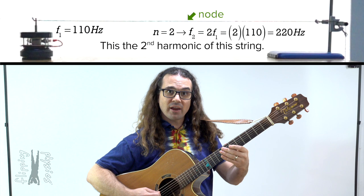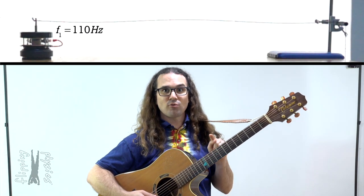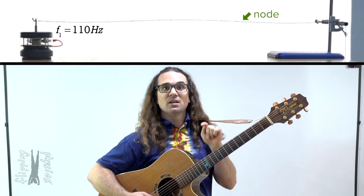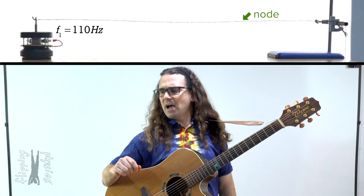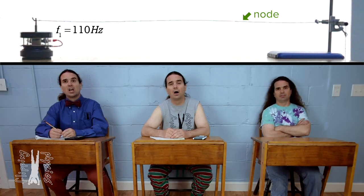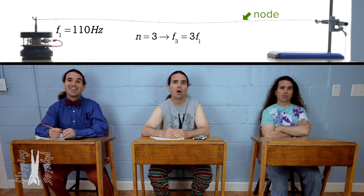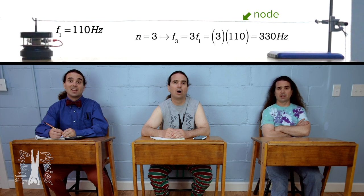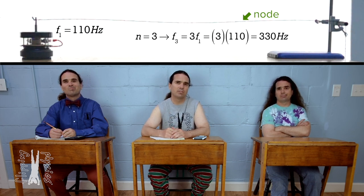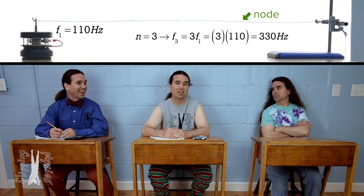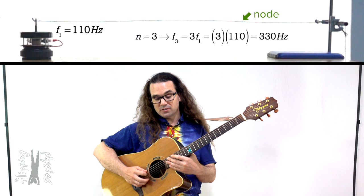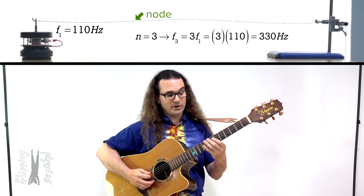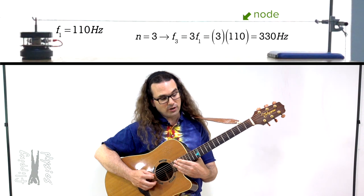If I again hold my finger against the string but do not press it against the fretboard, I force a node at this point. This time I am holding my finger one-third of the way from the end of the string. If you are creating a node at one-third L, then this should be the third harmonic — three times 110, or 330 hertz. Moving your finger to the other end and forcing a node one-third from that end also forces a node at one-third L, creating the same third harmonic at 330 hertz.